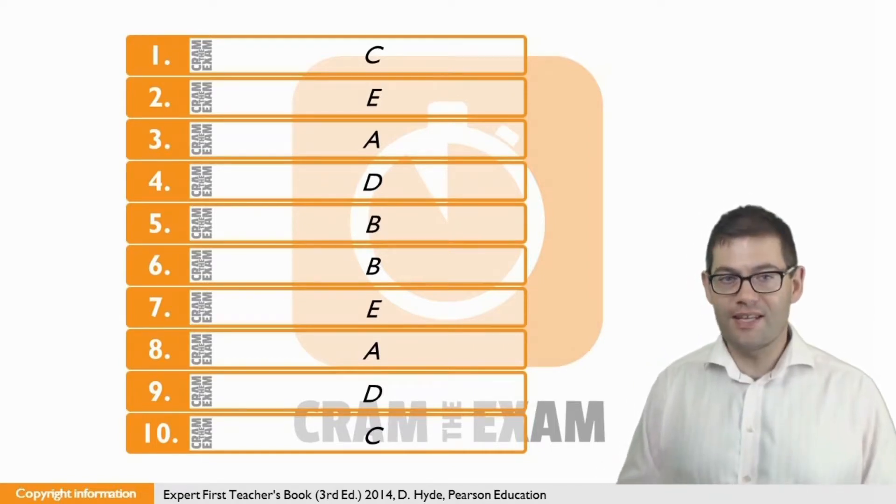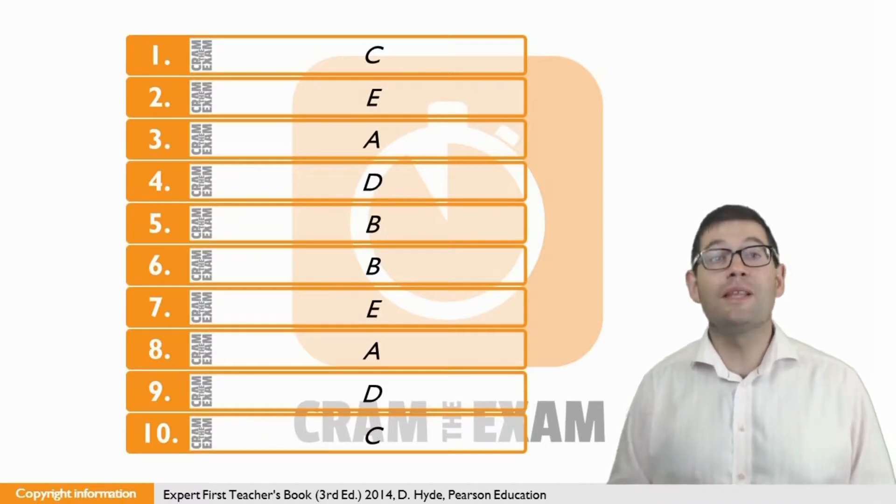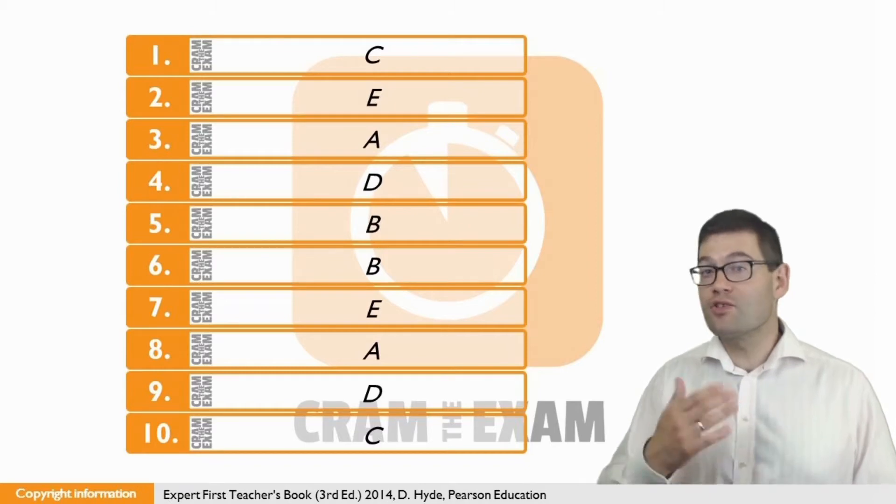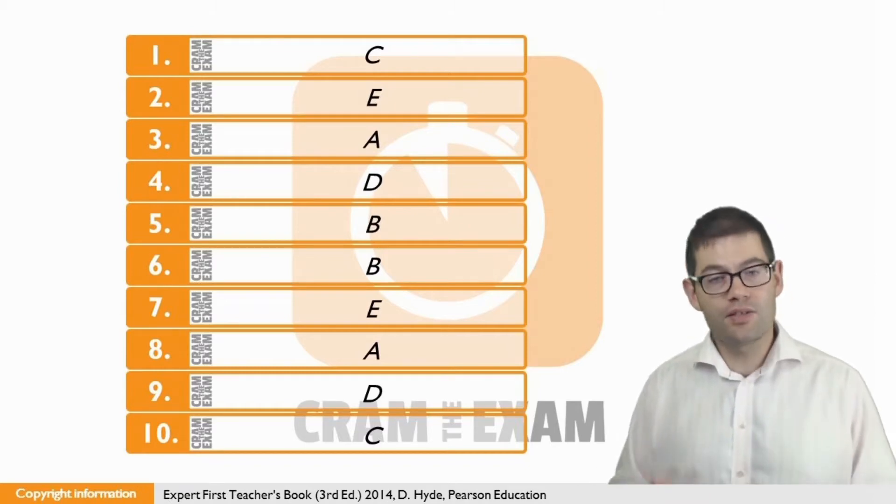For question nine, the answer is D. Graham prefers to support less fashionable charities. The idea of less fashionable charities is shown in D, when he says that they give to organisations that get less publicity, rather than trendy ones linked to celebrities.